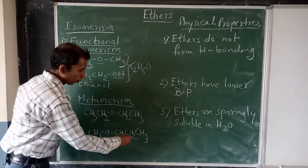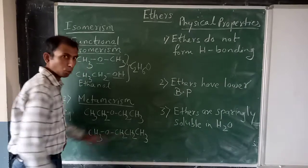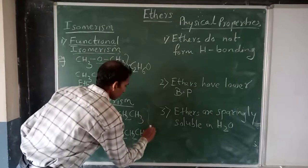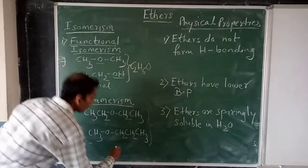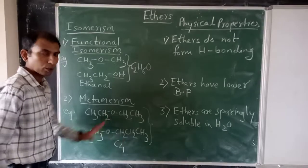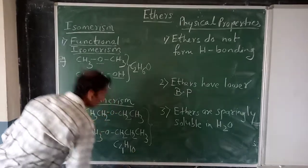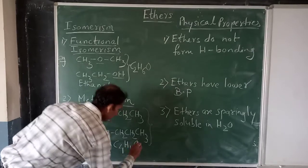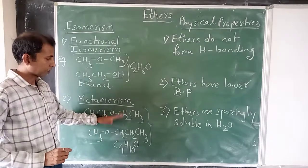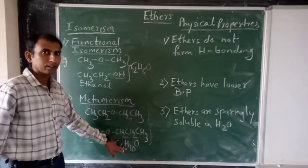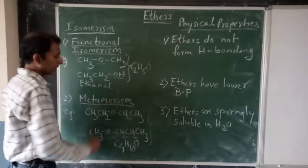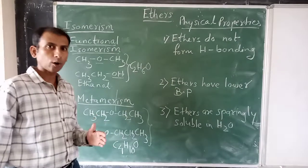In the second example, one alkyl group is a propyl group - one, two, three carbon atoms. And the second one is a methyl group. But what is common in both? How many carbons? Four. How many hydrogens? Ten. And here also ten. How many oxygens? One. So the structures are different, but the molecular formula is the same. Such types of isomers are called metamers, and the isomerism is called Metamerism.